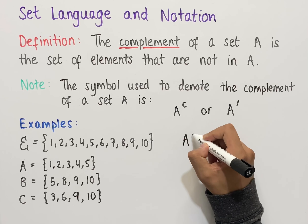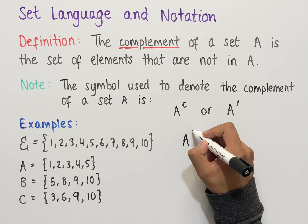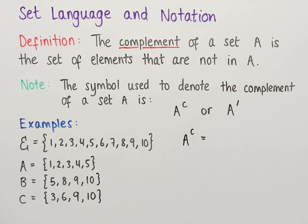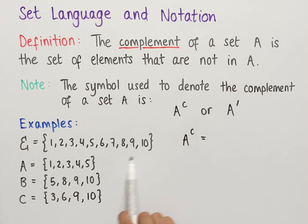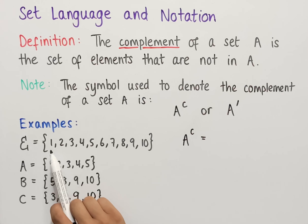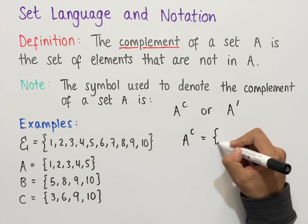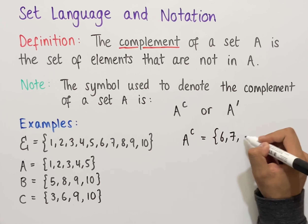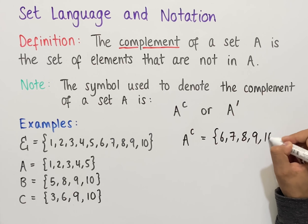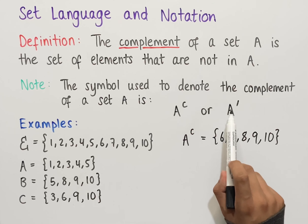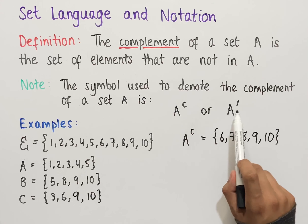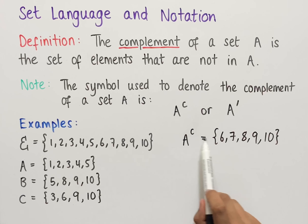We can write A complement as A with a superscript C, and this is all of the elements that are not in set A. Set A contains elements 1, 2, 3, 4, and 5. The universal set is 1 through 10, so all the elements not in A but in the universal set are 6, 7, 8, 9, and 10. This is A complement. We could also use the notation A with a superscript dash, which is the same.